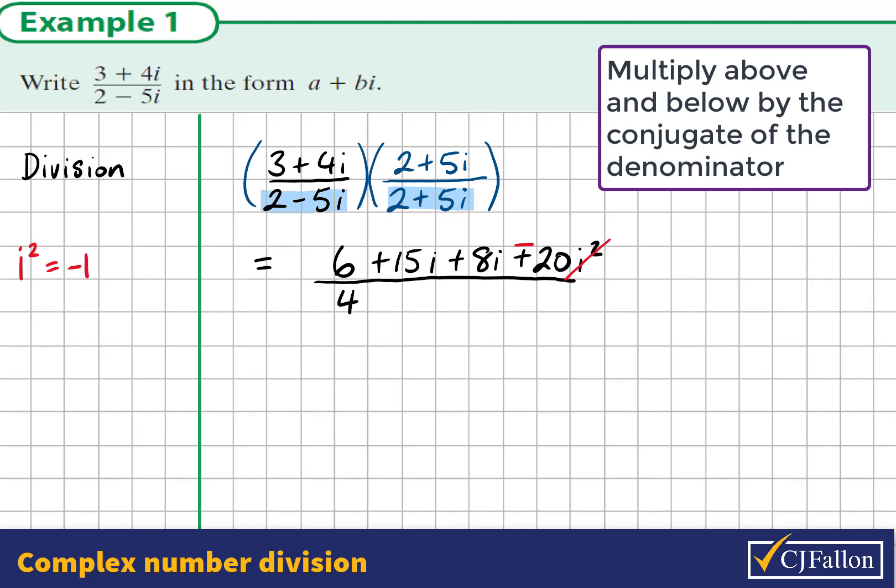It would be 2 by 2, 2 by 5i, negative 5i by 2, and negative 5i by positive 5i, giving negative 25i squared.